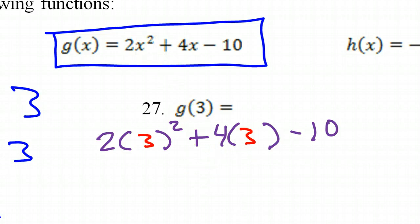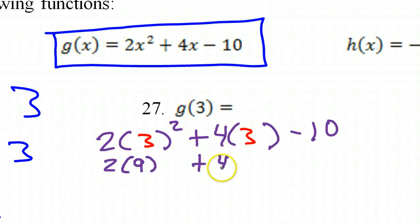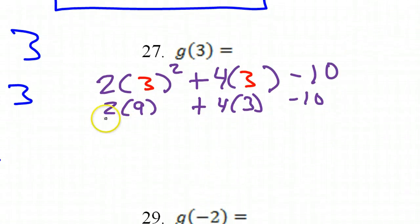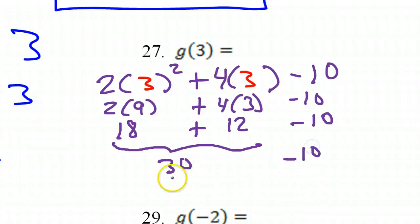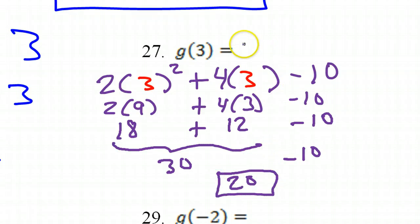I can do this by hand. You square it first, so this would be 2 times 9, plus 4 times 3 minus 10. Now I can do all my multiplication. 2 times 9 is 18, 4 times 3 is 12. 18 plus 12 is 30. And 30 minus 10 is 20. So your answer is 20. As an ordered pair, this would look like 3 comma 20.